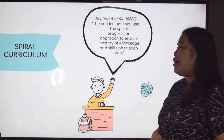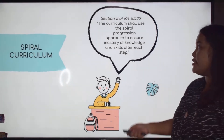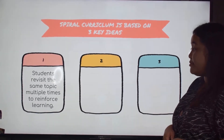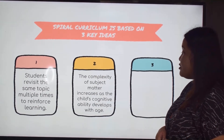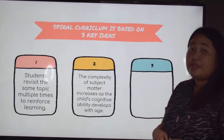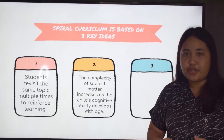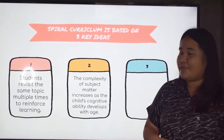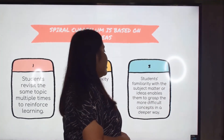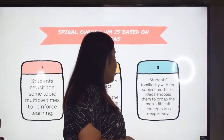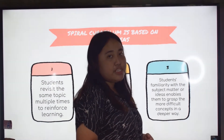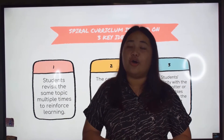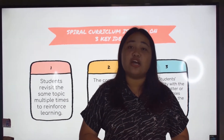Now let us see what ideas the spiral curriculum is based on. First, students revisit the same topic multiple times to reinforce learning. Second, the complexity of subject matter increases as the child's cognitive ability develops with age — that is why lessons in first grade are the same as in second grade, but with more depth. Lastly, students' familiarity with the subject matter enables them to grasp more difficult concepts in a deeper way, since they already have the main idea from previous years.